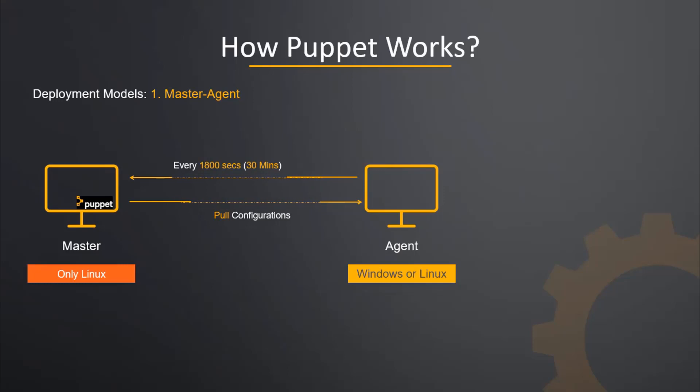Remember, the master node can only be Linux. You cannot have Windows operating system as your master node in Puppet. However, the agent can be configured on any supported operating system flavors such as Linux, Windows, Solaris, or Mac OS.